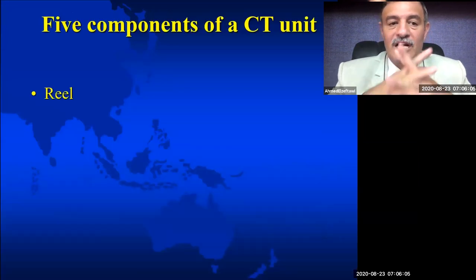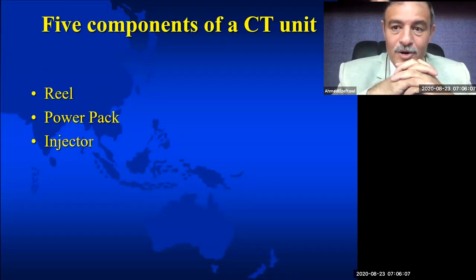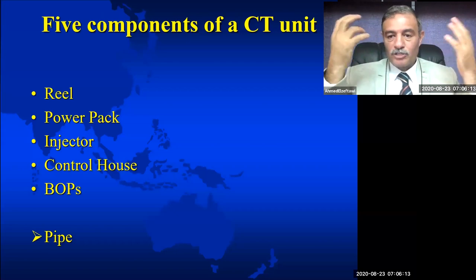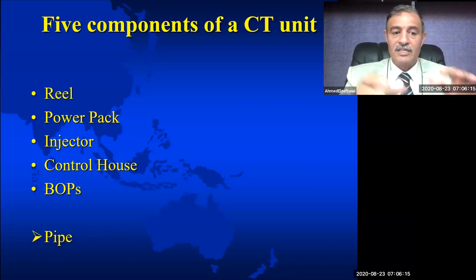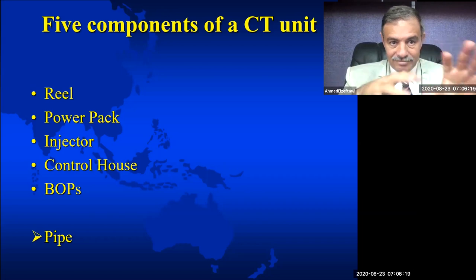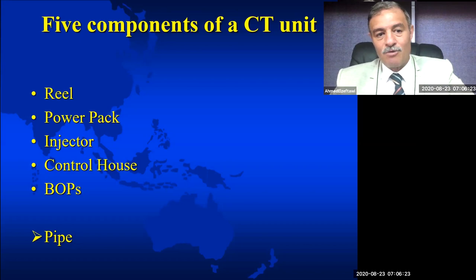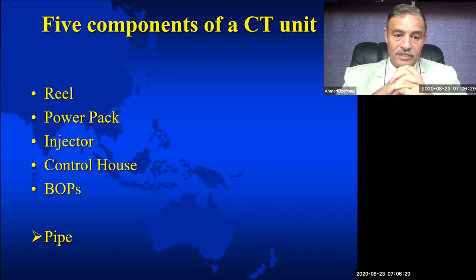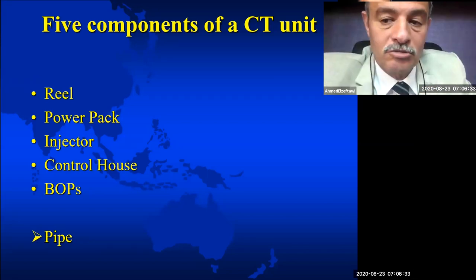The coil tubing generally consists of a reel, power pack, injector, control house, blowout preventer or pressure control equipment in general, and then the pipe. I put pipe separately and in bold because the pipe itself plays a major role in the success of the coil tubing operation.